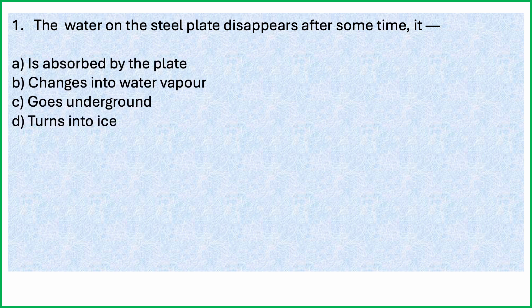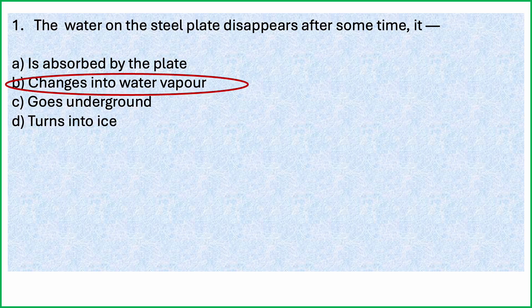The water on the steel plate disappears after some time because: it is absorbed by the plate; changes into water vapour; goes underground; turns into ice. Which is the correct answer? The water on the steel plate disappears after some time — it changes into water vapour. This water gets converted into the gaseous state called water vapour.